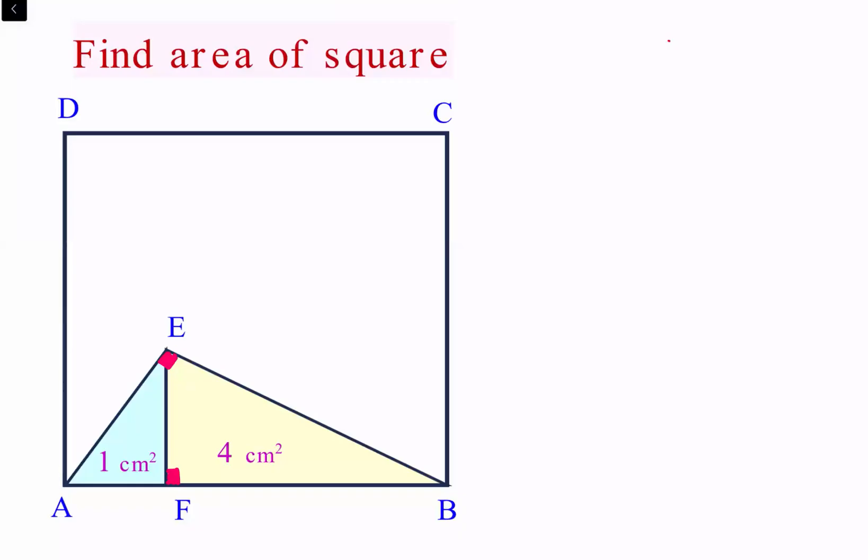In today's question, ABCD is given as a square. Inside the square we have a right angle triangle, triangle ABE. Inside this we have drawn an altitude AF and it's dividing the triangle into two triangles.